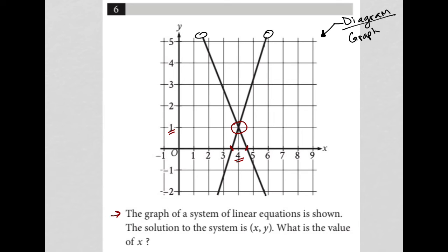So the solution to a system of equations is always the point of intersection. This point right here that I'm circling in green. So the question is simply asking what's the x-value of that solution?